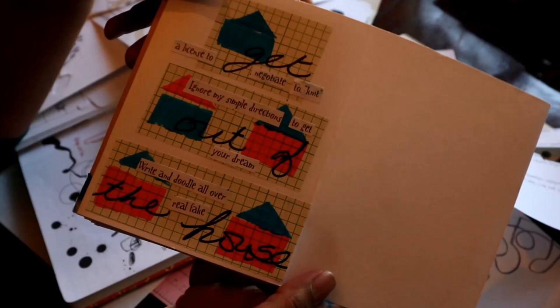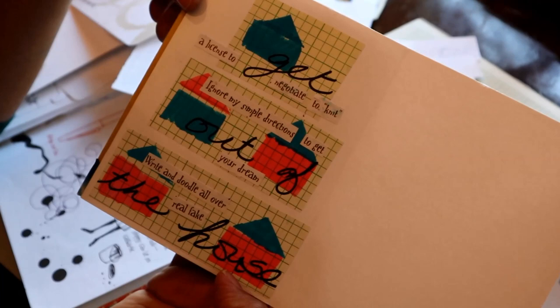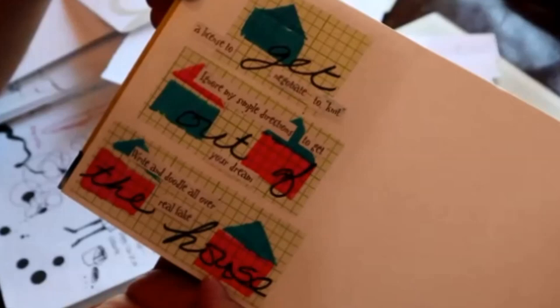So what have I said here? Get a license to negotiate to knit. Ignore my simple directions to get out of your dream. Write and doodle all over the real fake house. You can find whatever meaning you like in those phrases there.